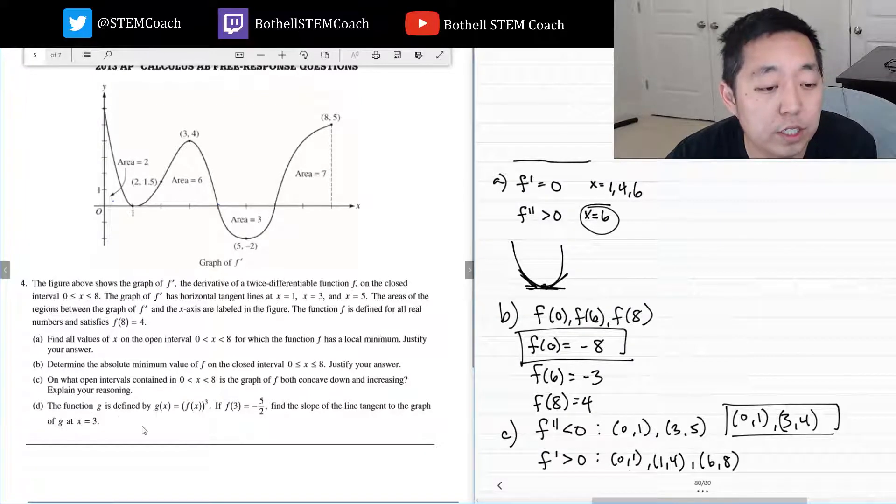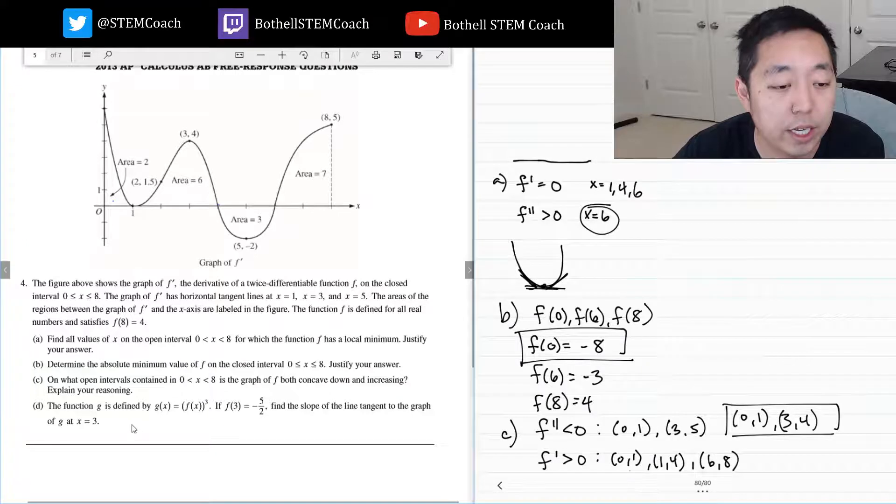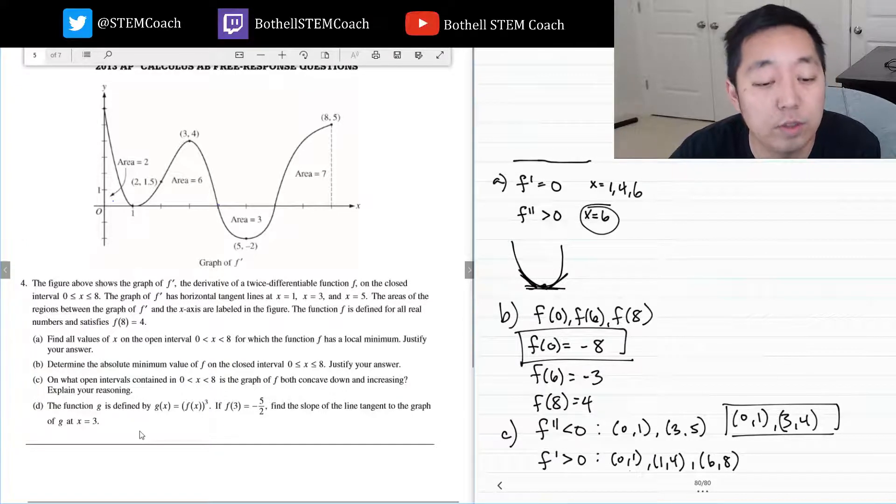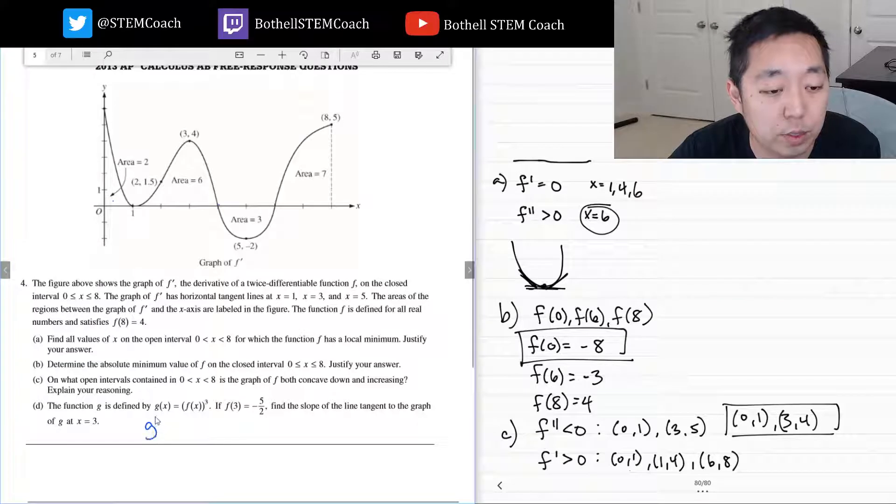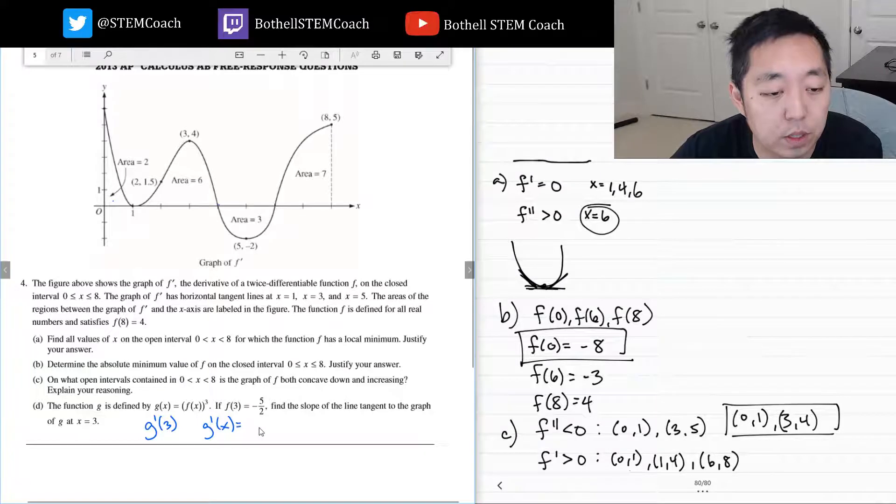The function g is defined by g of x equals f cubed. If f of 3 equals negative 5 halves, find the slope of the tangent line to the graph of g at x equals 3. Slope of the tangent line means the derivative, so I really need to just compute what g prime of 3 is. G prime of x is equal to, by the power rule, 3 f of x squared, but since the inside is not x, I've got to multiply by the derivative.